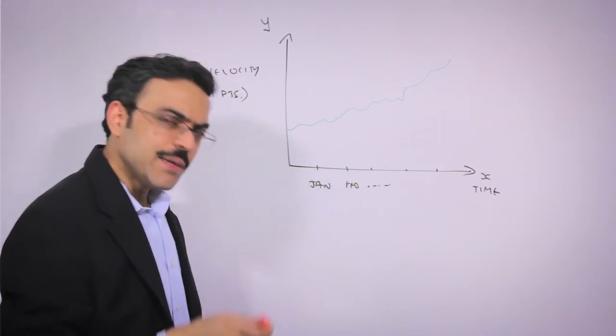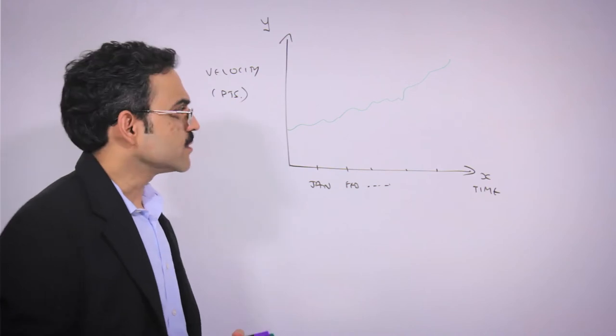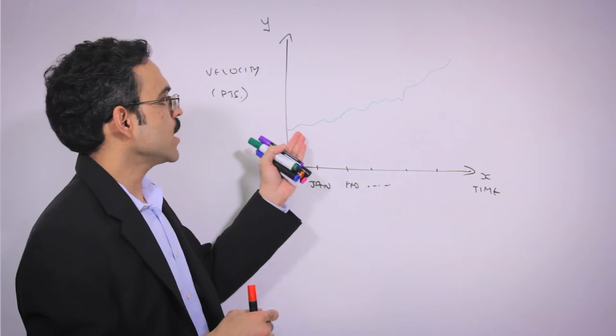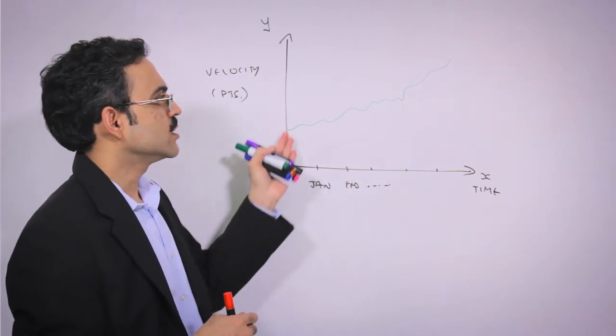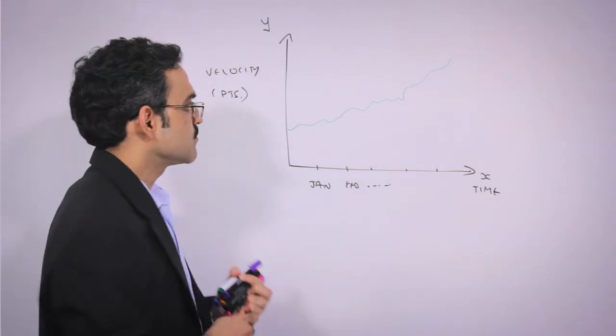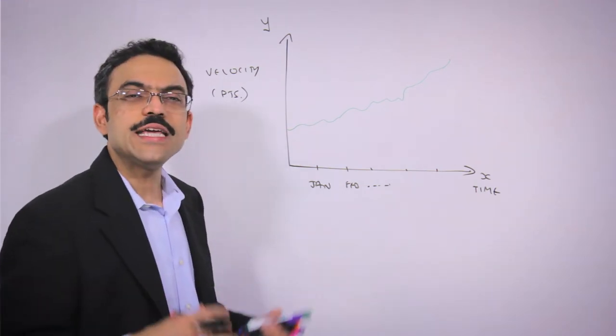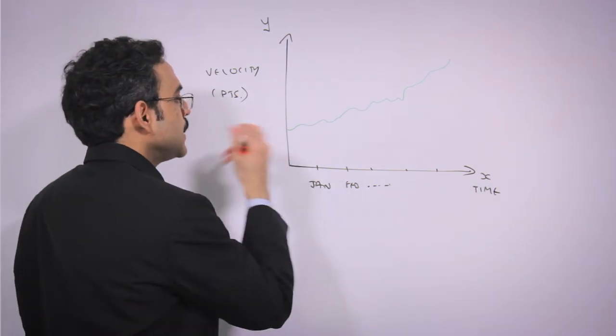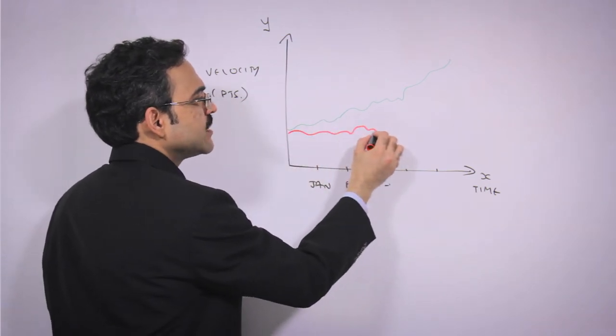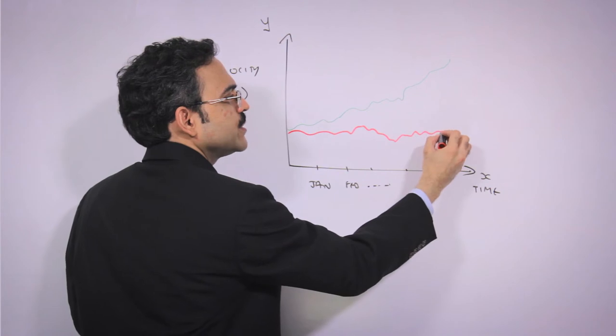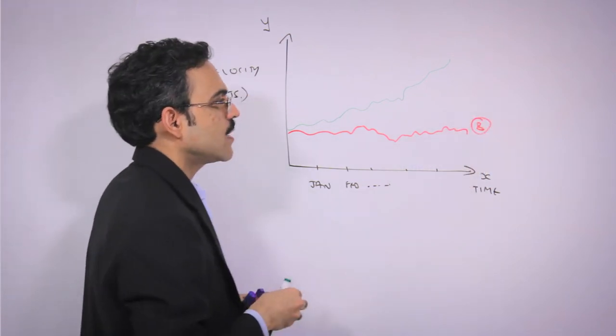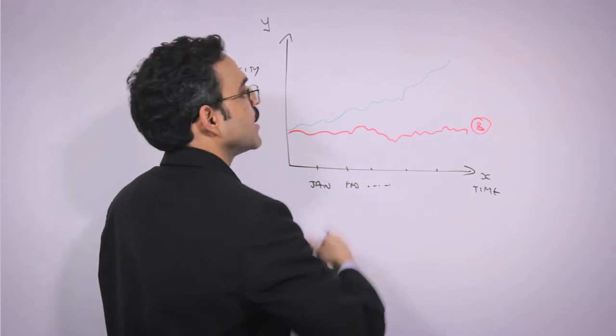Let me give you an example and ask you a question. Imagine that there were two teams or teams of teams. Maybe one graph is showing you the velocity of five, a group of five teams. Let's call them team of team A, and there is another graph showing the velocity of team of team B. Both have about five teams in there.